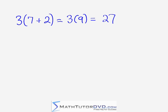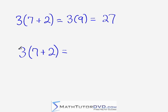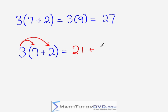Now, when we begin to learn algebra, we start to learn about this thing called distribution, which lets you tackle these kinds of things in different ways. Another way of doing this, instead of adding what's inside and then doing the multiplication, is that anytime you have something on the outside of parentheses, you can distribute it in to each term. So using distribution, we do 3 times 7, that's 21, and then distribute into the other term: 3 times 2, which gives us 6. The reason it's a plus here is because it's a plus inside. 21 plus 6 is equal to 27.